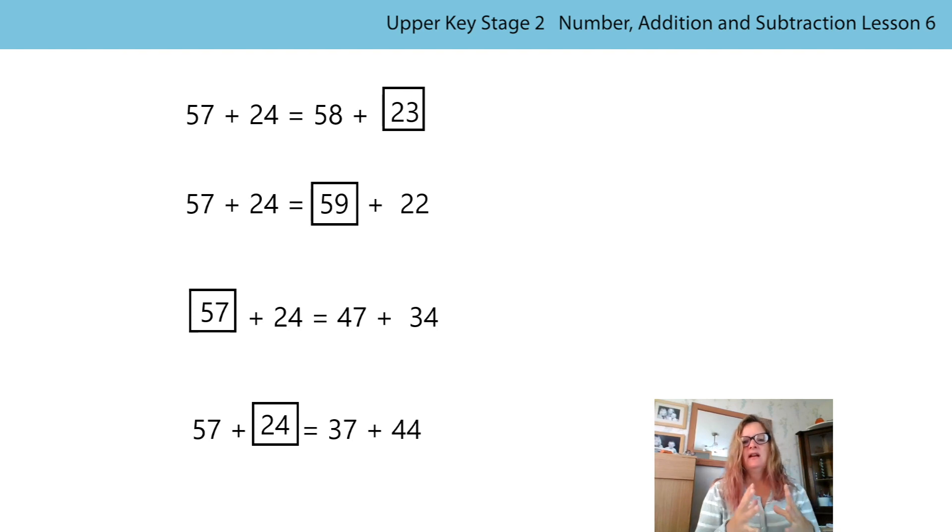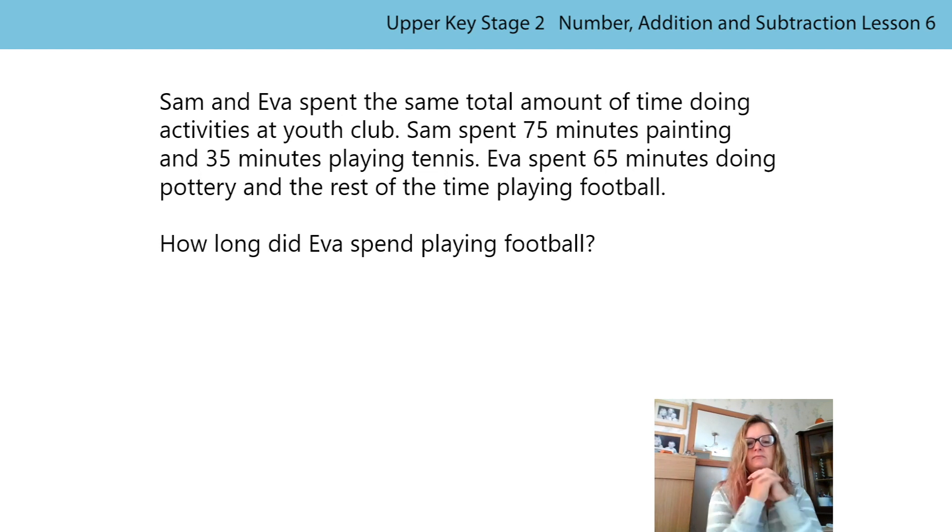Okay, so it's really important in math that we're looking at the relationship between the numbers, between the addends on one side and the addends on the other side, and usually then you can just redistribute and calculate without having to do any more complicated calculations. There's always more than one method to do this, but we want you to be using the most efficient method. Shall we have a look at a word problem?